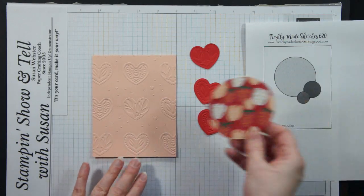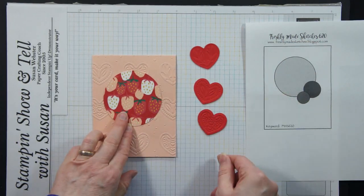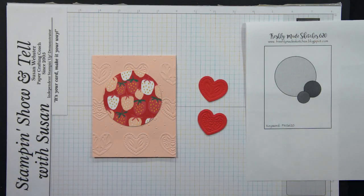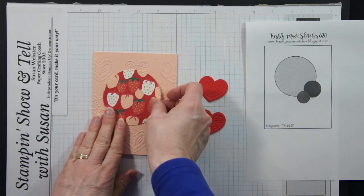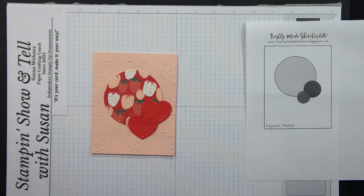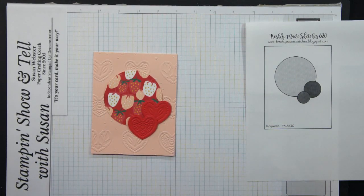Alright so what I want to do is I'm going to put this in the center just like the sketch shows. I'm going to pick two of the hearts. I think I'm going to go with those two. I'll leave this one for another project. So this is going to go there and then we're going to have two hearts down here as embellishments. Okay so now I need a little sentiment.